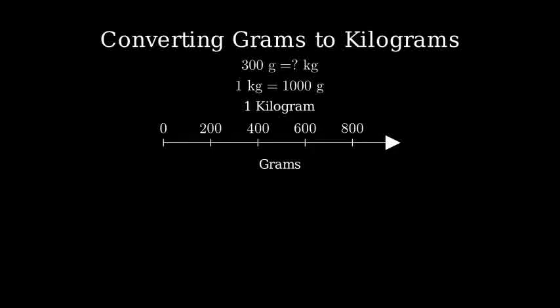To convert 300 grams to kilograms, we can use a conversion factor. We'll multiply 300 grams by the ratio of 1 kilogram to 1,000 grams. Notice that the units of grams will cancel out, leaving us with kilograms.